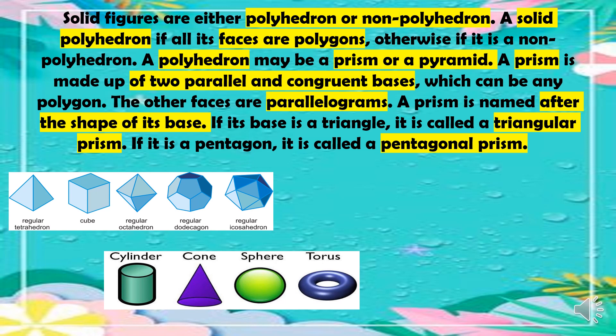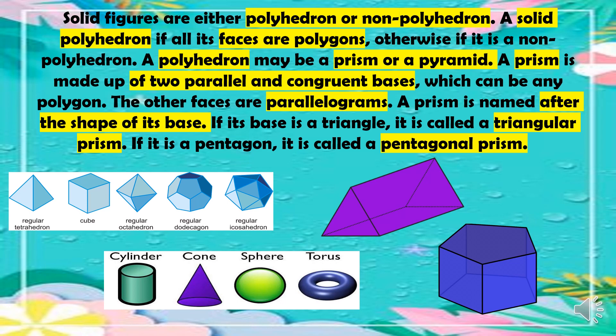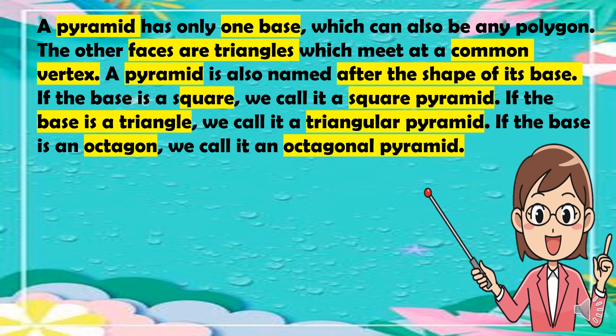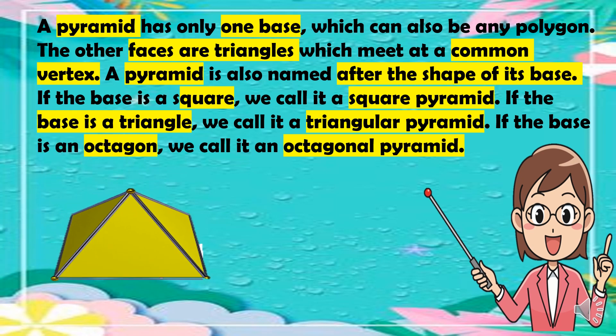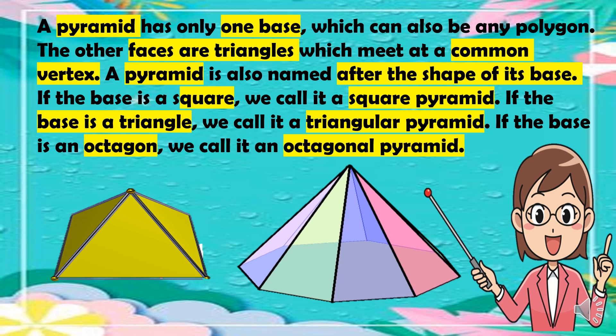A prism is made up of two parallel and congruent bases, which can be any polygon. The other faces are parallelograms. A prism is named after the shape of its base — if its base is a triangle, it is called a triangular prism; if it is a pentagon, it is called a pentagonal prism. A pyramid has only one base, which can also be any polygon. The other faces are triangles which meet at a common vertex. A pyramid is also named after the shape of its base — if the base is a square, we call it a square pyramid; if the base is a triangle, a triangular pyramid; and if the base is an octagon, an octagonal pyramid.